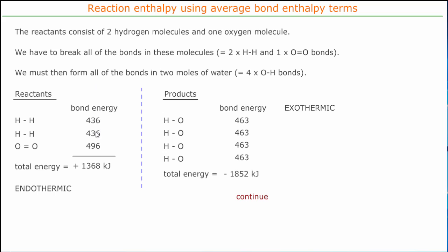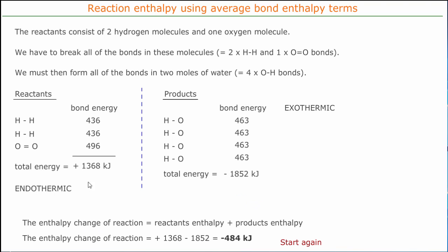We must put in energy to break the bonds, and then we get energy back — it's released by making bonds. The total energy for the reaction will be the energy required to break bonds minus the bond energies released making bonds. This gives us 1368 minus 1852, and so we get −484 kJ of energy.